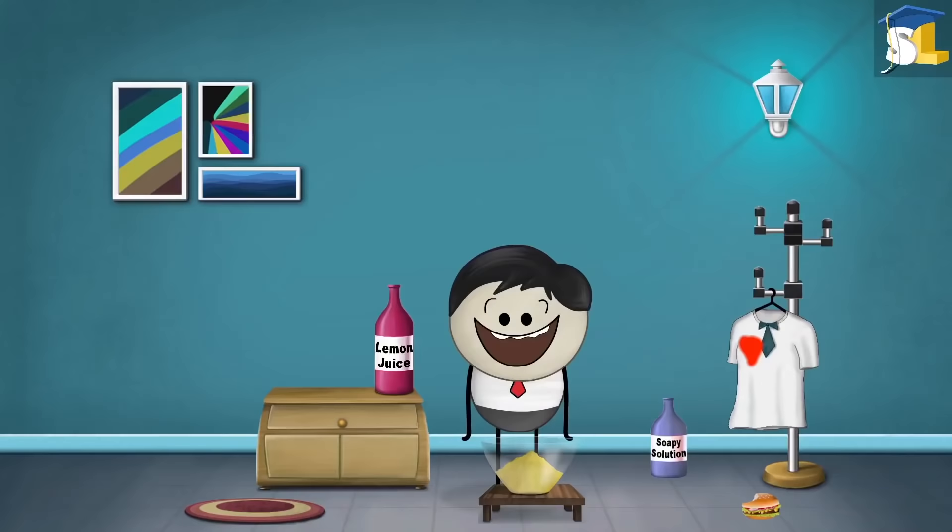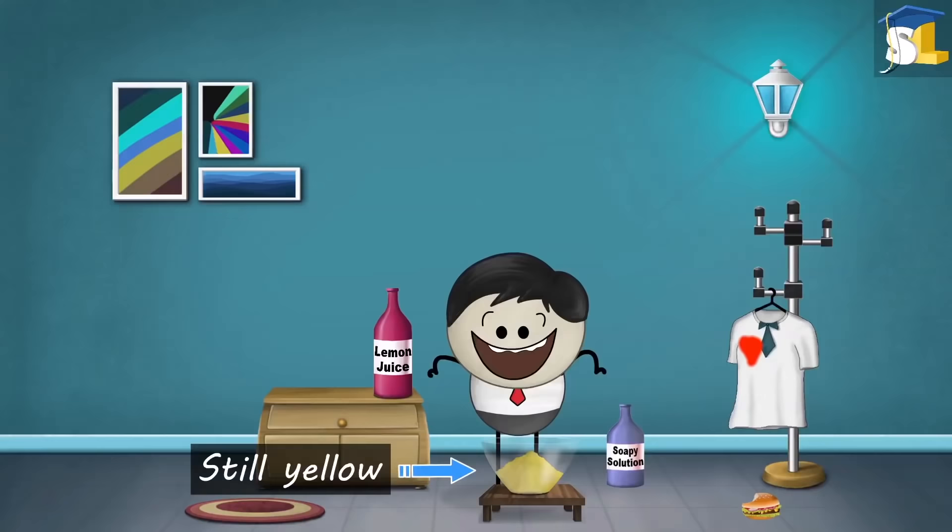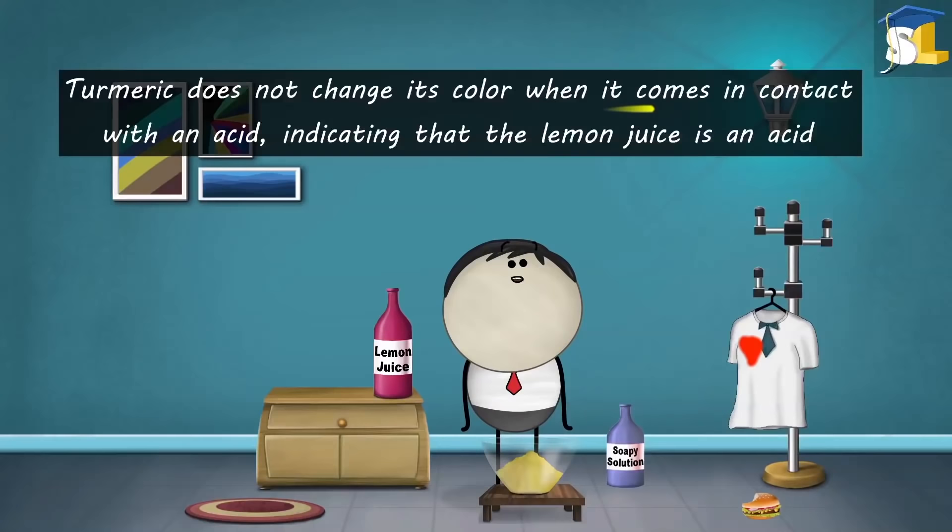Let us get back to those two bottles. One contained lemon juice while one contained a soapy solution. When we pour the lemon juice on the turmeric powder, we see that the color of turmeric powder is still yellow. This is because lemon juice is an acid. Turmeric does not change its color when it comes in contact with an acid, indicating that the lemon juice is an acid.